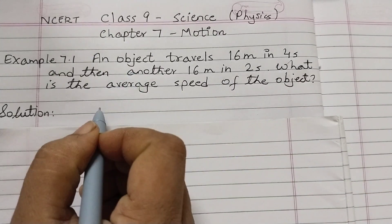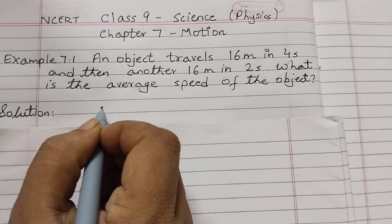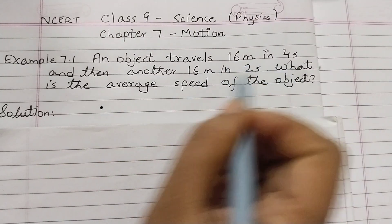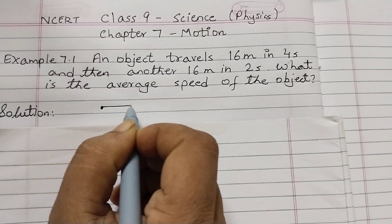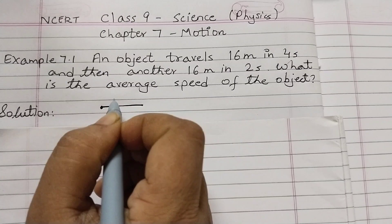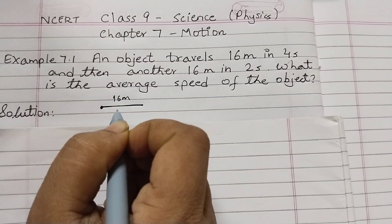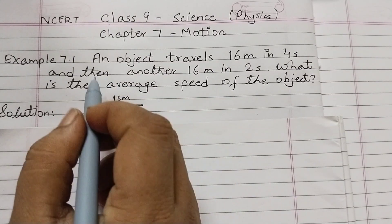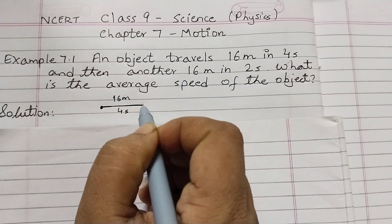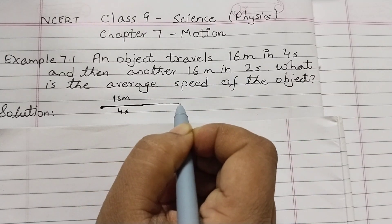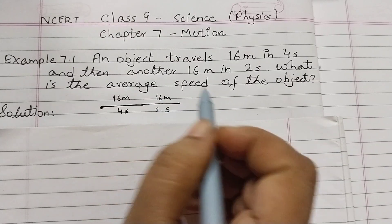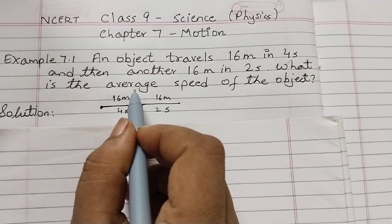So there is an object — let's say this is the object here. It travels 16 meters in 4 seconds, covering a distance of 16 meters in 4 seconds, and then another 16 meters in 2 seconds. We need to find the average speed.